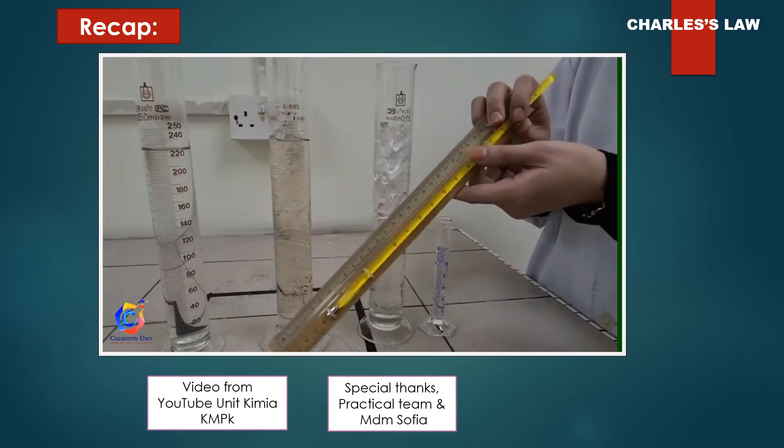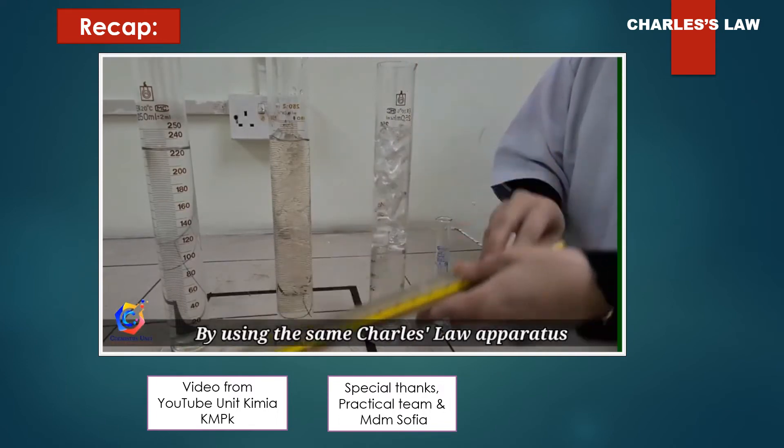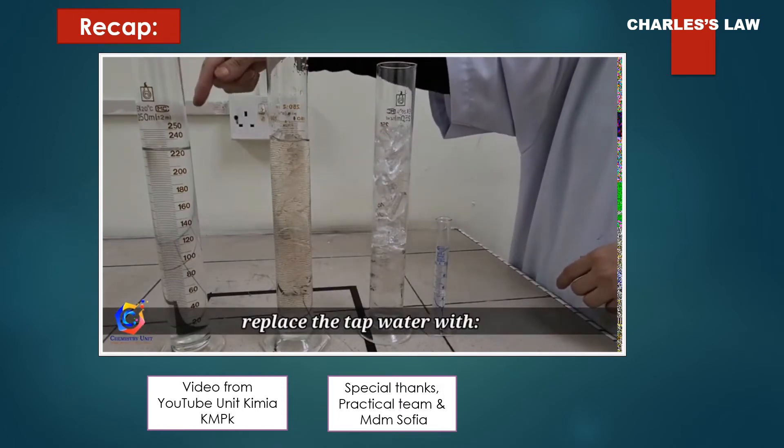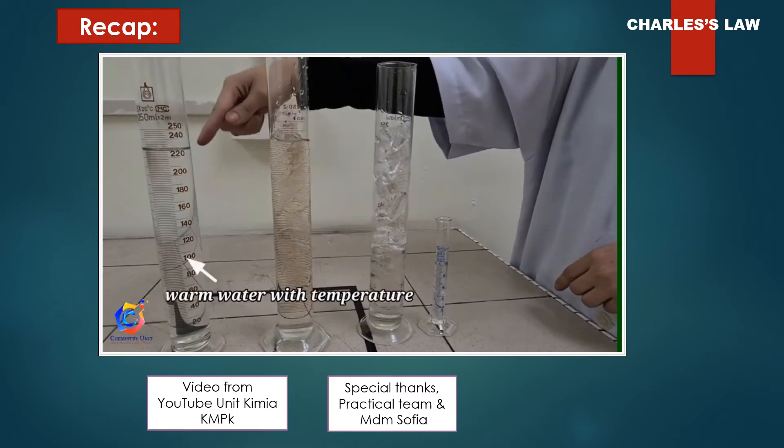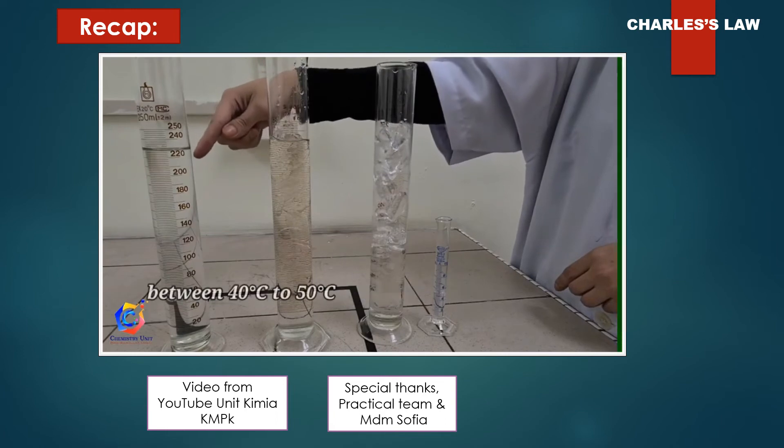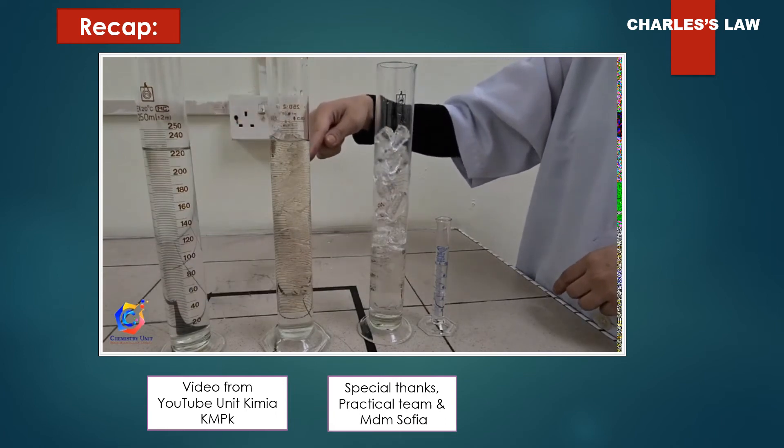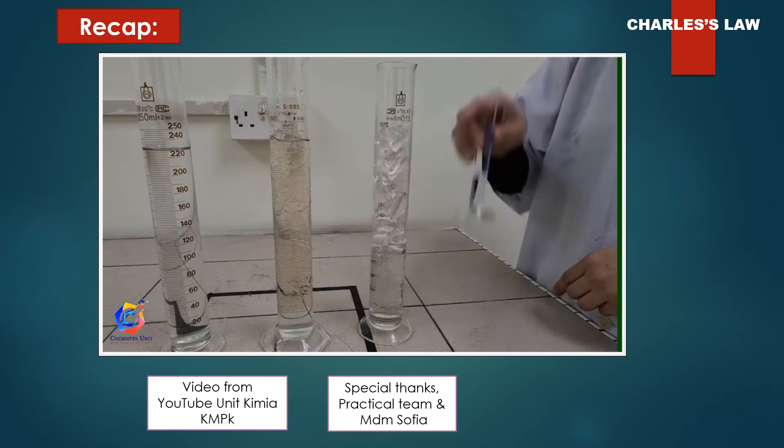The height of the gas column is measured from the sealed end to the bottom of the mercury plug. By using the same Charles's law apparatus, repeat step 2 to 4. Replace the tap water with warm water with a temperature between 40 to 50 degrees Celsius, a mixture of ice and water, and a mixture of ice and 5 ml of methanol.